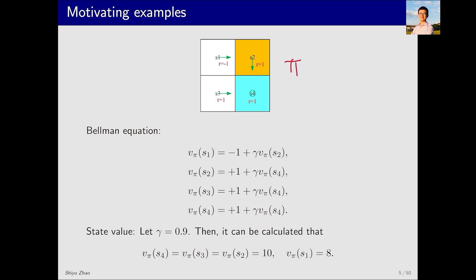First, the Bellman equation. This is also a revisit of our last lecture. It allows us to obtain an equation for every state. For instance, v pi s1. Starting from here and moving right, I receive an immediate reward of negative 1, then gamma. Because I jump to s2, so the following is v pi s2. Similar equations can be obtained for other states.